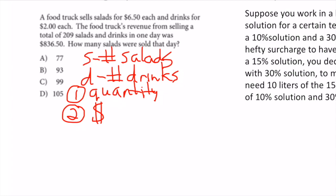Knowing this, my first equation is about quantity: the number of salads plus the number of drinks equals 209, which is told to me right there.